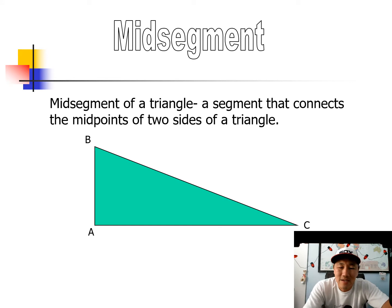Mid-segment. The mid-segment of a triangle is a segment that connects the midpoints of two sides of a triangle. So, for example, let's say the middle of AB is somewhere here, and then the middle of AC is somewhere here. Well, if I connect them, oh, look at there. That is called the mid-segment.